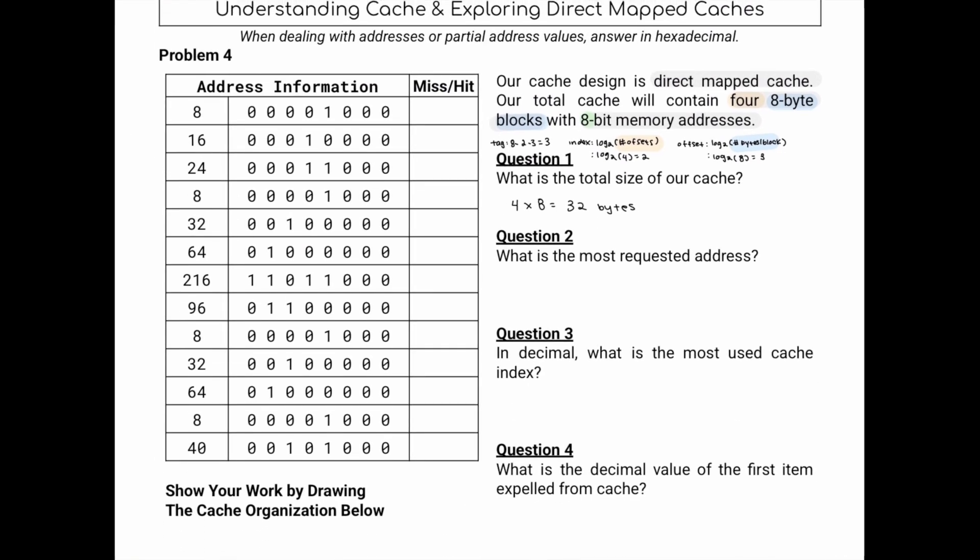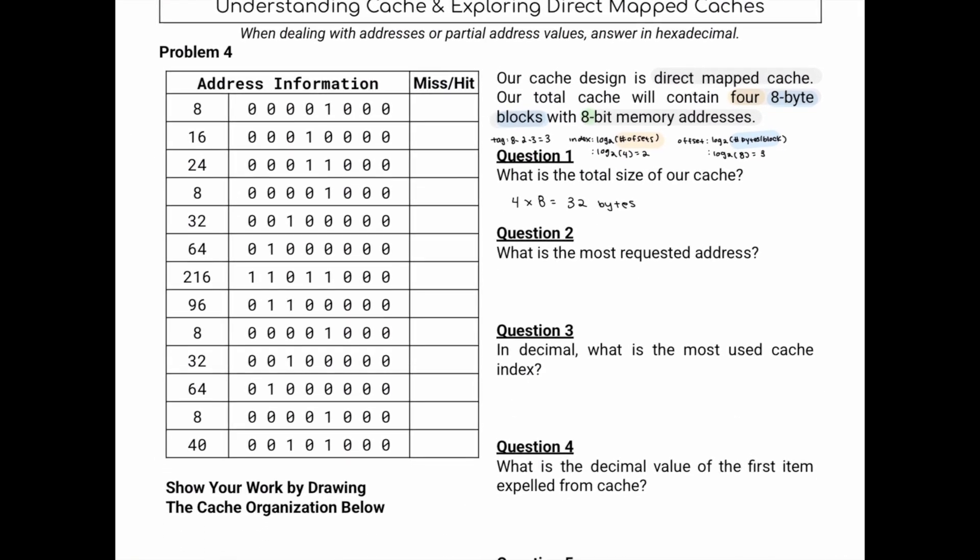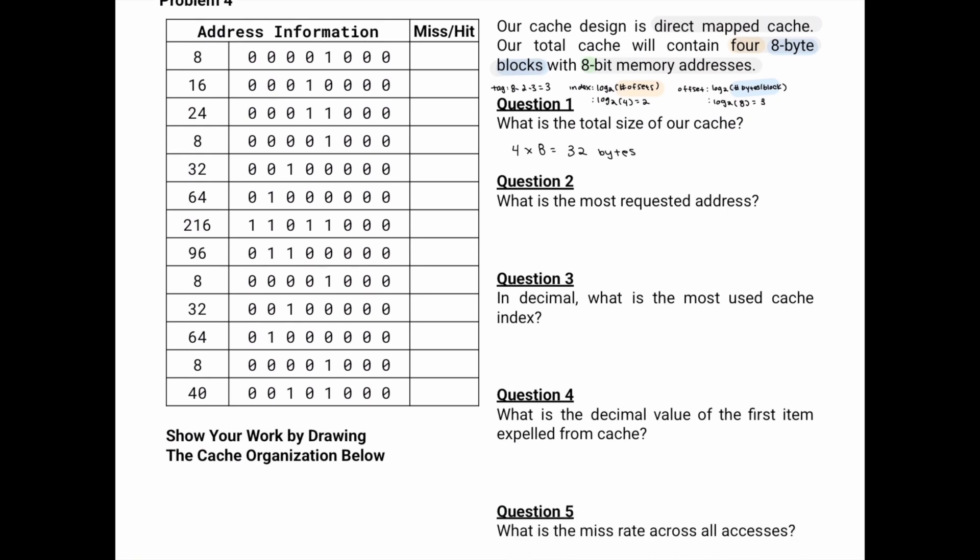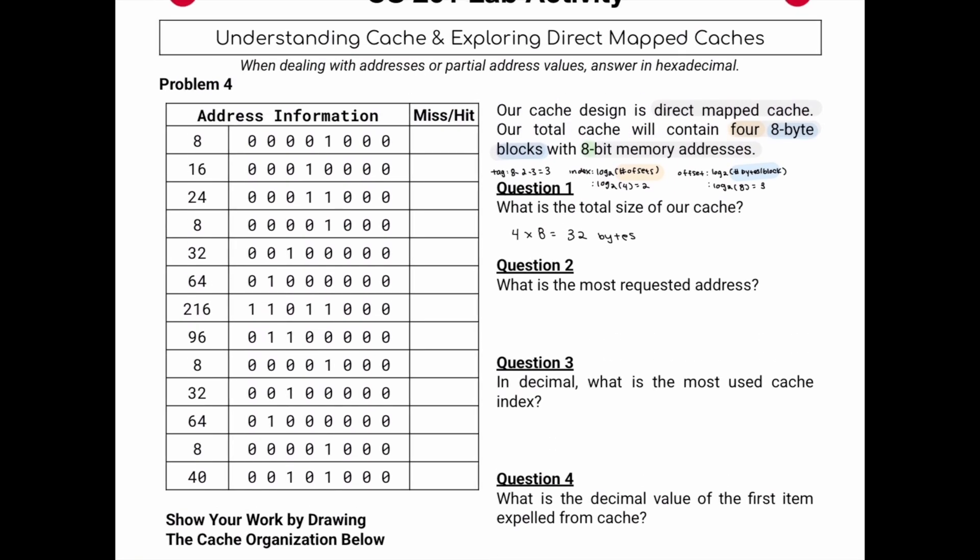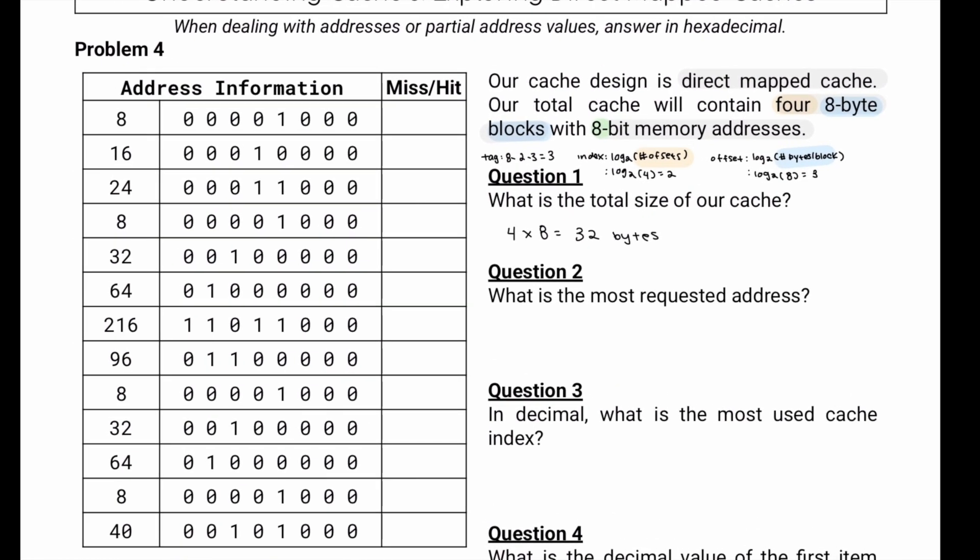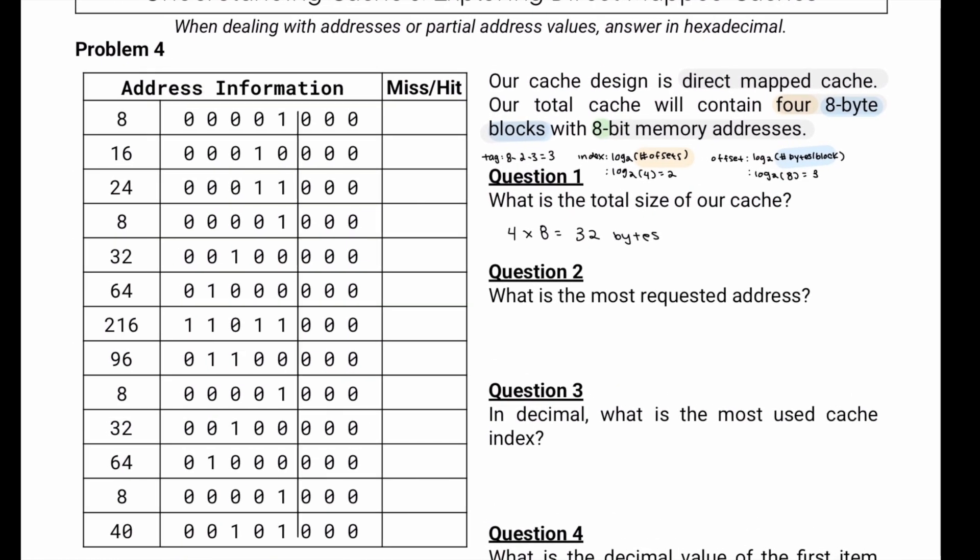The rest of the questions, we're going to have to actually go through this table and then see what addresses are requested the most. So first let's find our offset, our index, and then our tag. We know our offset is going to be those last three bytes.